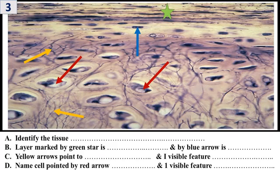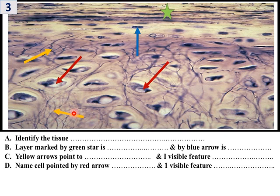This is yellow elastic cartilage. How do you know? By the presence of elastic fibers. Here is the perichondrium with outer fibrous and inner chondrogenic layers, the chondrocytes, and these are the elastic fibers — that is how you identify yellow elastic cartilage.